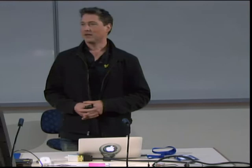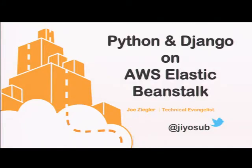I think we've got a really good story for Python and AWS. The interfaces and the APIs work quite well with Python. The person who actually wrote the main library, which is called Boto, we hired him, and he works out of Seattle now. So we're really heavily invested on the Python side. If you guys have any questions, just interrupt me while I'm going along here. I'm going to talk a little bit about Elastic Beanstalk.